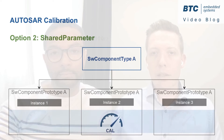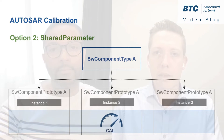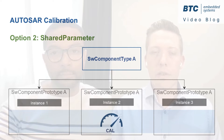The second option is that the calibration is defined to share the same value with all the instances of the software component type, and here the calibration is called shared parameter.